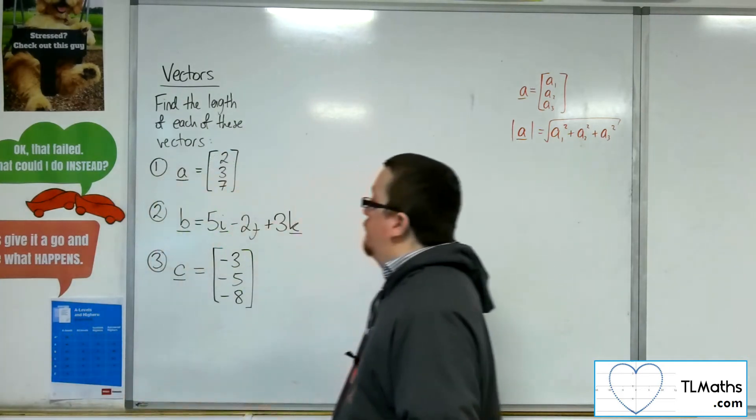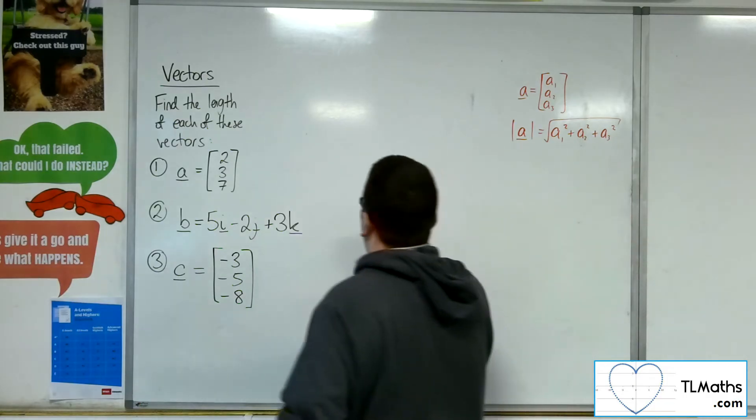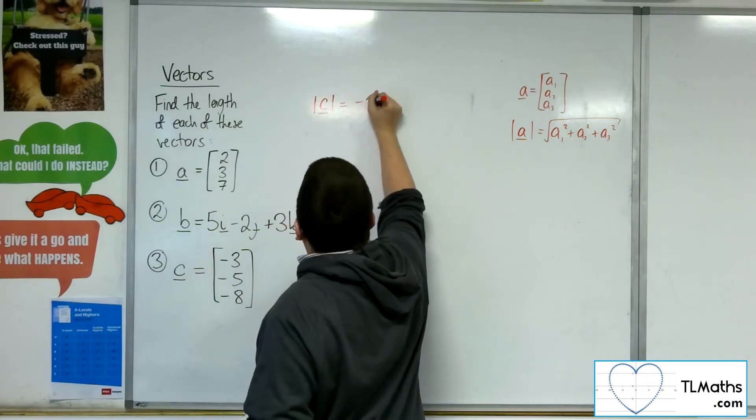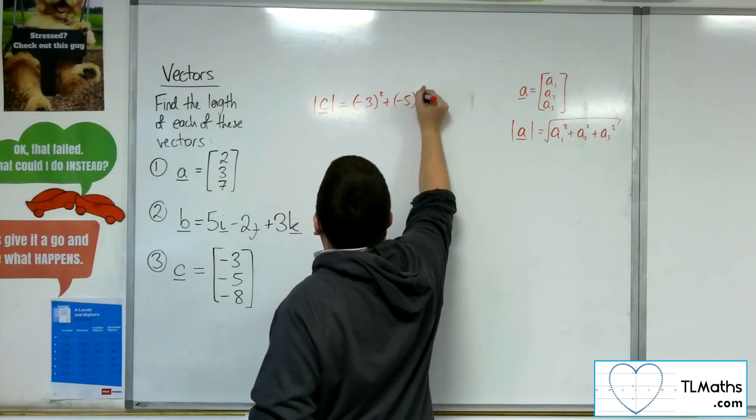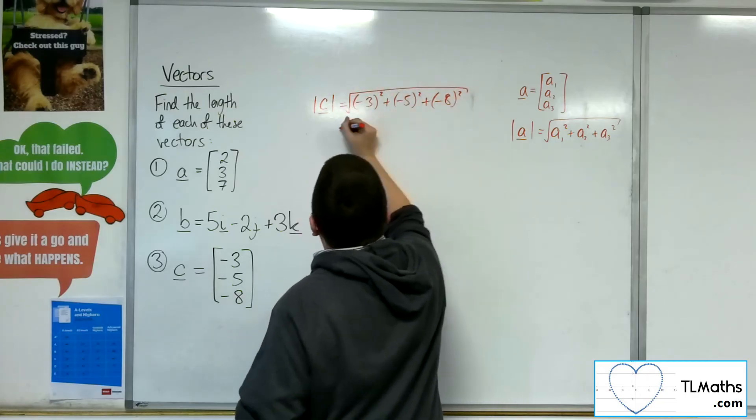Finally, number 3, C equals minus 3 minus 5 minus 8. So, the length of C is minus 3 squared plus minus 5 squared plus minus 8 squared square rooted.